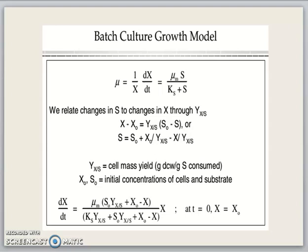This is the batch culture growth model. As we mentioned in the lecture before, this equation mu equals 1 over X dX/dt, which is equivalent to the Monod equation mu_m S over Ks plus S. This is a very important equation.